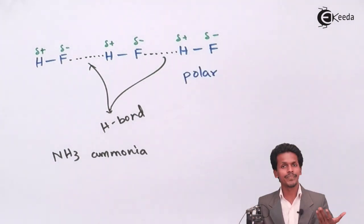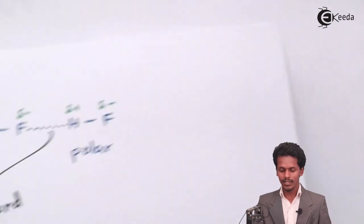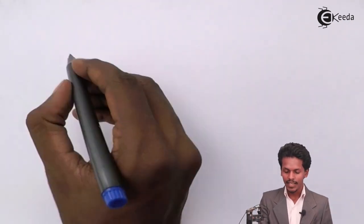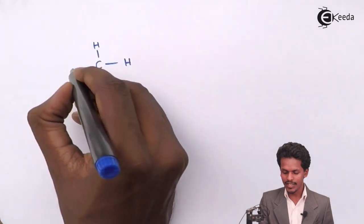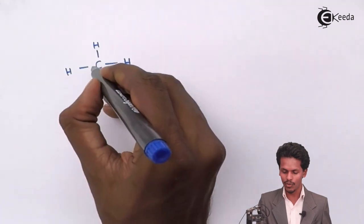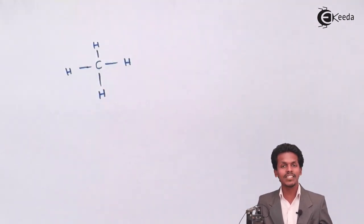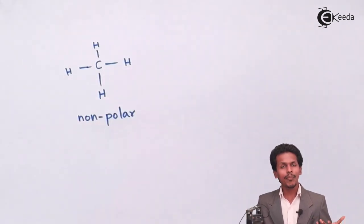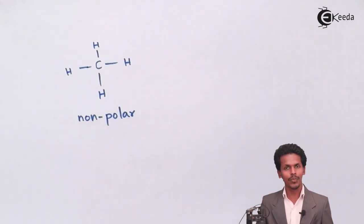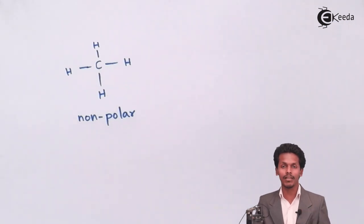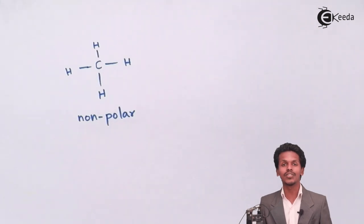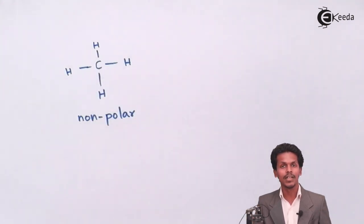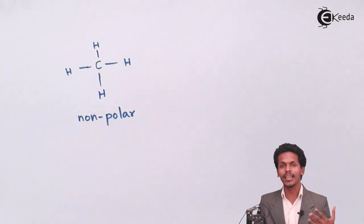These were examples based on polar molecules — we could call them dipole molecules. Now talking about non-polar molecules, let me give the first example: methane. Methane has a structure — note this is not the geometry, just the structure. Methane is a non-polar molecule, so its dipole moment μ equals zero. Since it is non-polar with zero dipole moment, it won't give rise to a large electronegativity difference between the two atoms present in the molecule.